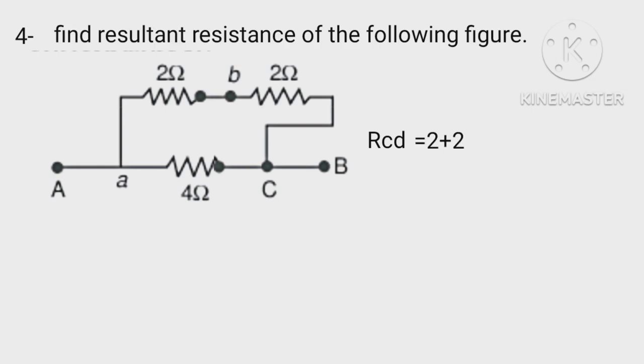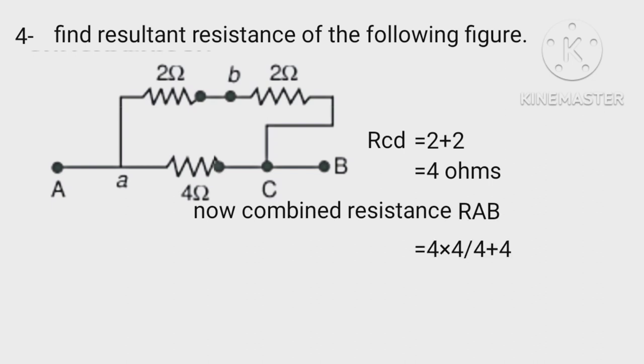RCD equals 2 plus 2 equals 4 ohms. Now combined resistance RAB equals 4 times 4 by 4 plus 4 equals 16 by 8 equals 2 ohms.